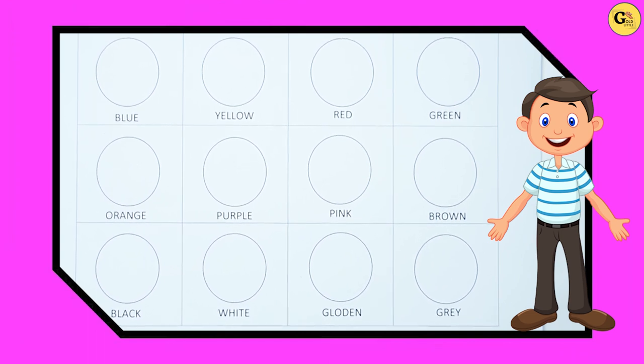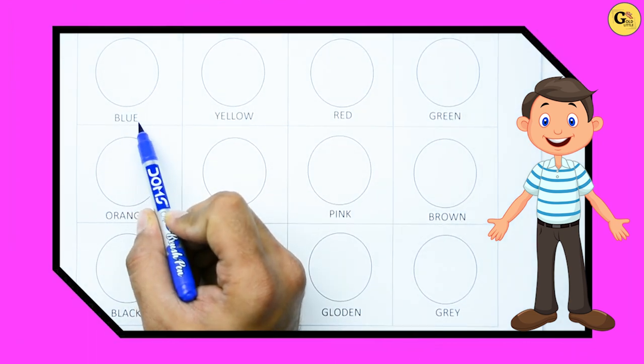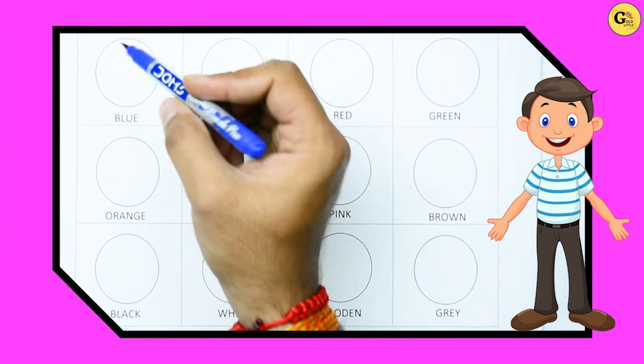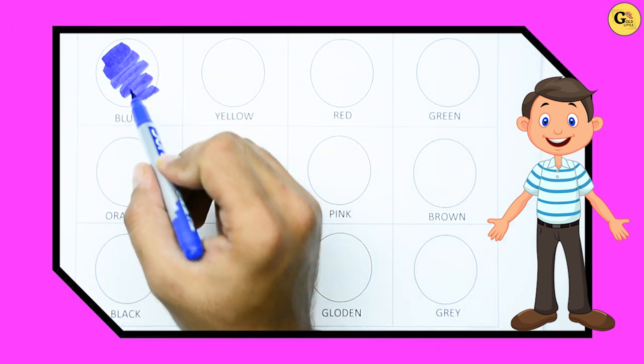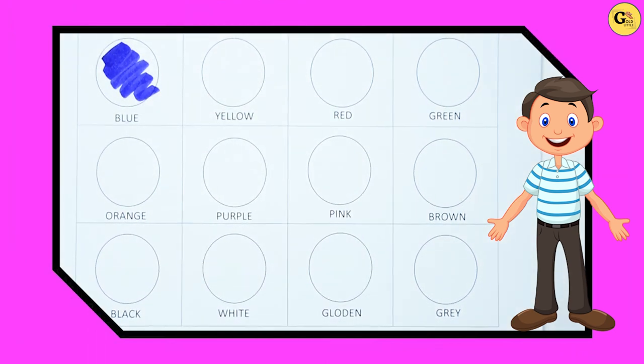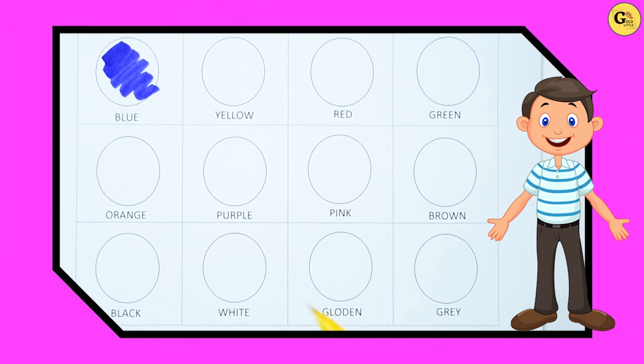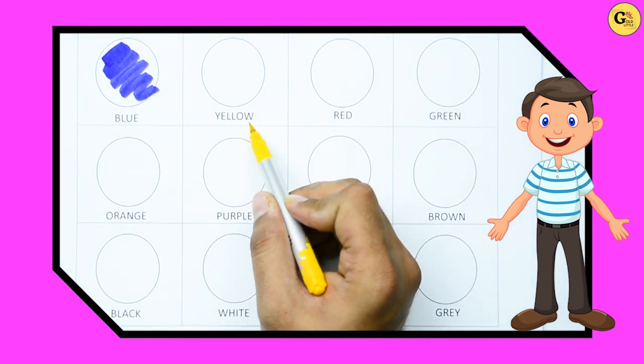Hello kids, today we learn colors. Fill the color blocks. Which color is this? B and UP, it's blue. So we fill blue color. Yes, it's blue. B-L-U-E. Now here is Y-E-double L-O-W, yellow.